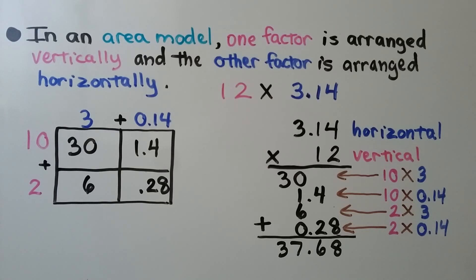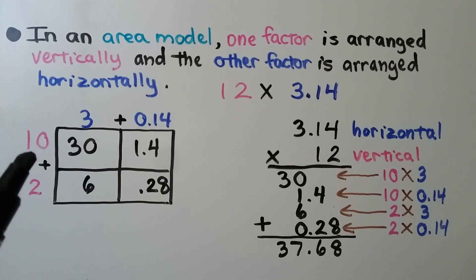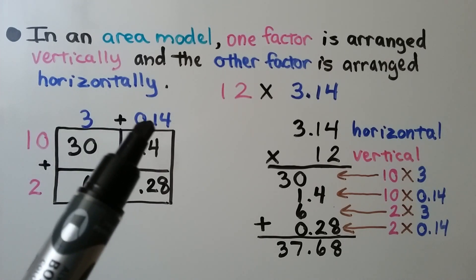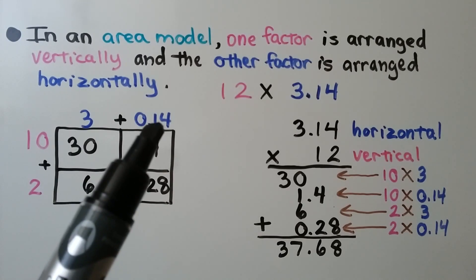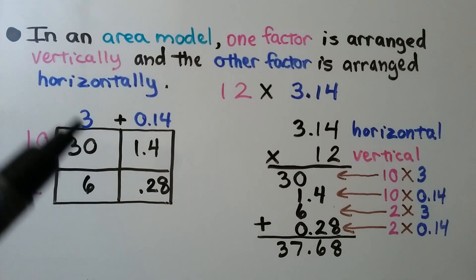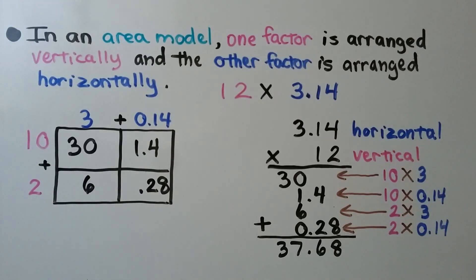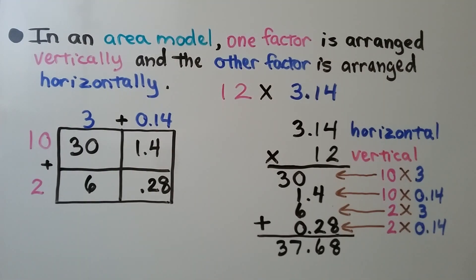In an area model, one factor is arranged vertically and the other factor is arranged horizontally. We have 12 times 3 and 14 hundredths. Our 12 is a 10 plus 2, and our 3 and 14 hundredths is 3 whole and 14 hundredths. 10 times 3 is 30; 10 times 14 hundredths — we move the decimal point one place to the right because we're multiplying by 10 — gives 1 and 4 tenths. 2 times 3 is 6, and 2 times 14 hundredths is 28 hundredths. We add all the partial products and get 37 and 68 hundredths.